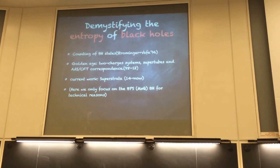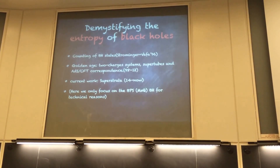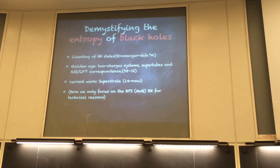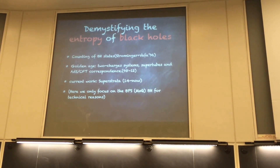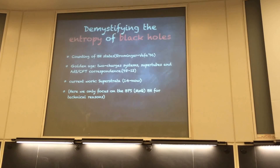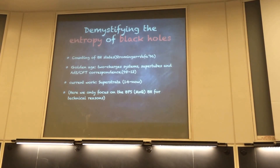This is the outline of this program. First, we study how to count the states of the black hole. Later, we construct solutions of supergravity to identify what the microstates are. The current work is something called a superstratum — a solution of supergravity. One remark: here we are only focused on the BPS black hole for technical reasons. You can think of a BPS black hole as a black hole in a similar equilibrium.